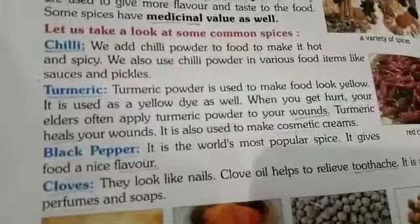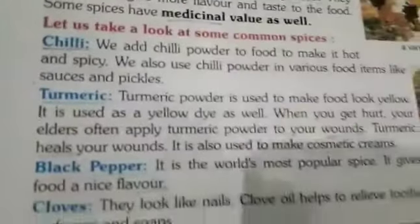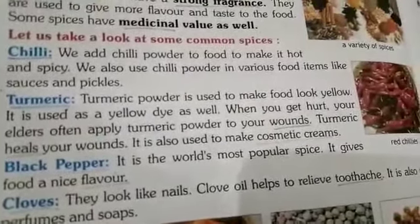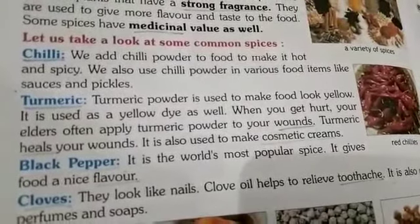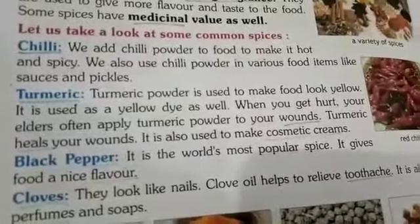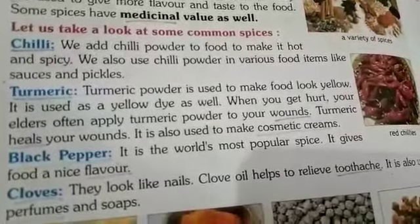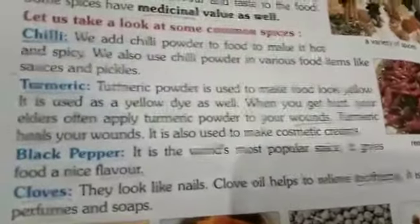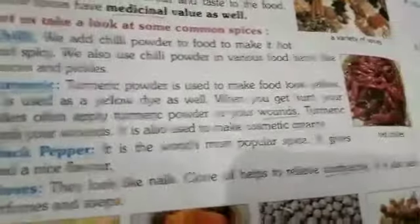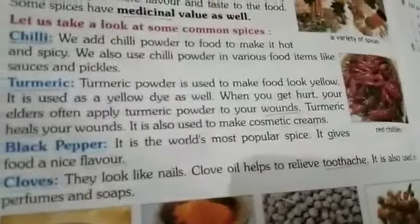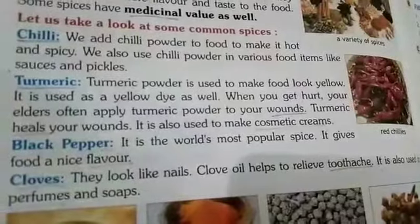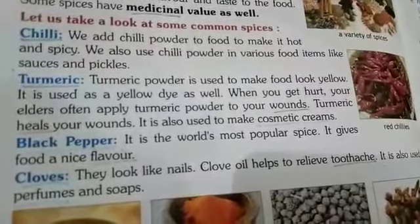The second spice is turmeric, which we call haldi. Turmeric is used in food to make it yellow, and it is also used to dye clothes yellow. If we get hurt, our elders apply turmeric powder to the wound — it will help the wound heal faster. Turmeric is also used to make cosmetic creams.